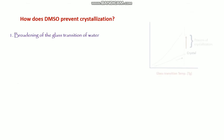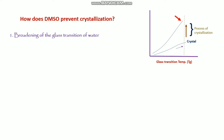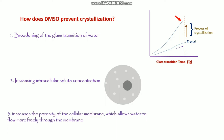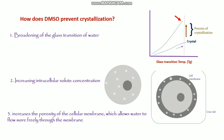How does DMSO prevent crystallization? First is the broadening of the glass transition of water. The glass transition temperature is very closely related to crystal formation, and DMSO broadens this transition. Second is increasing the intracellular solute concentration. Third is increasing the porosity of the cellular membrane, which allows water to flow more freely through the membrane. These are the three important reasons why DMSO prevents crystal formation.